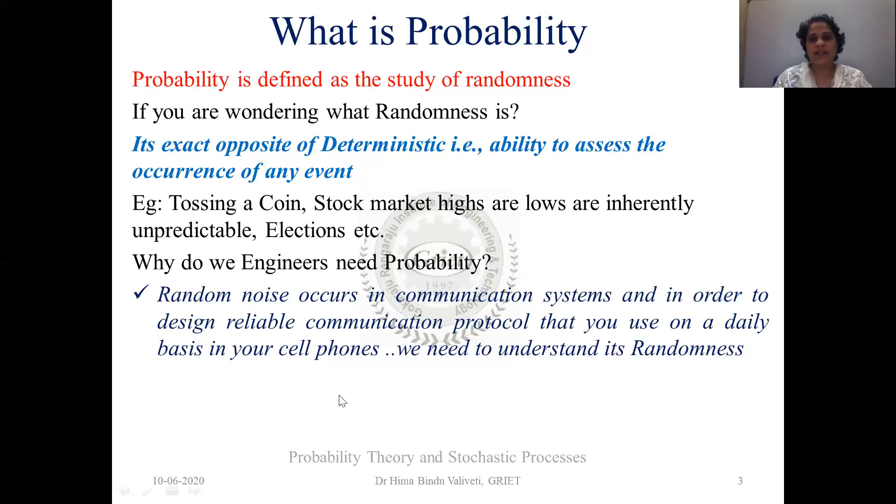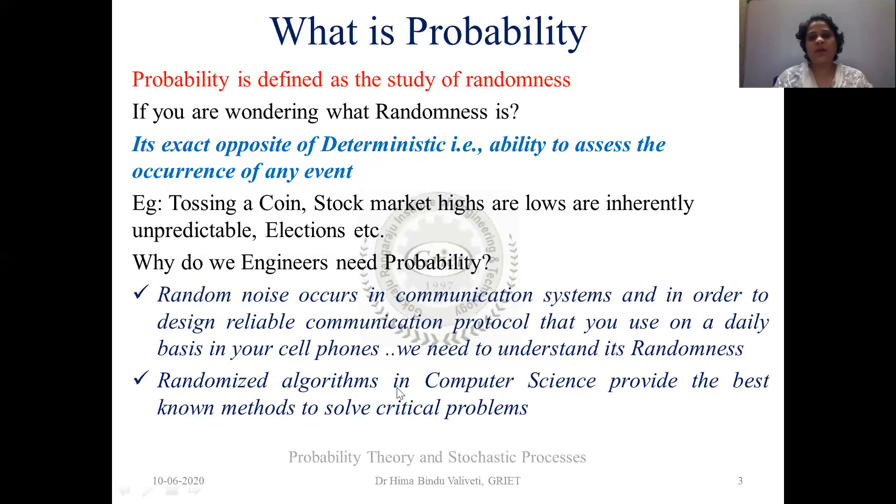And as the name itself implies, noise is absolutely random in nature. It is just scribbling. Noise is like if you scribble on a writing pad or on a paper, that can be termed as noise. Whereas if you draw a sine wave with a certain amplitude and a very particular phase, then you call that deterministic in nature. So to study that randomness, we need to understand what probability is in the first place. Apart from this, if you talk about computer science engineers, there are many randomized algorithms that are in place, which are used to solve highly critical problems. So for that also, we need probability.